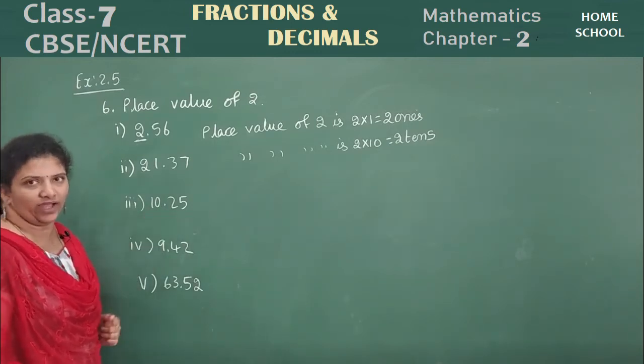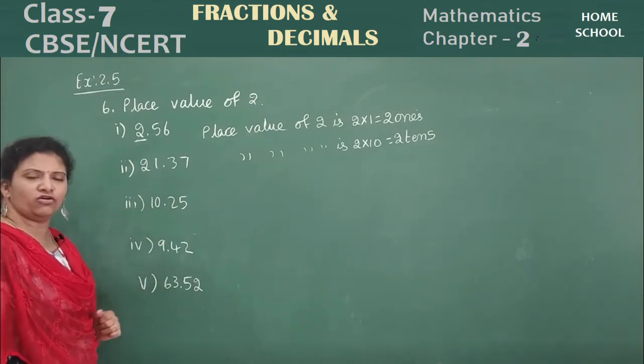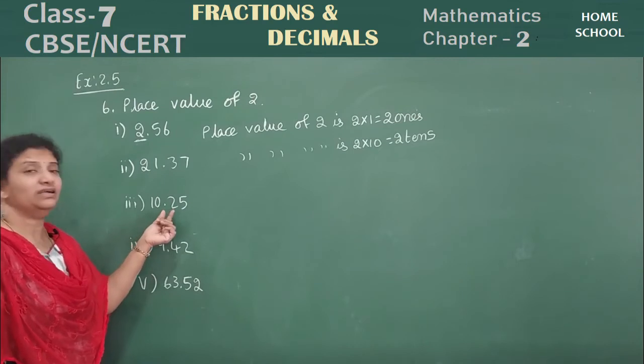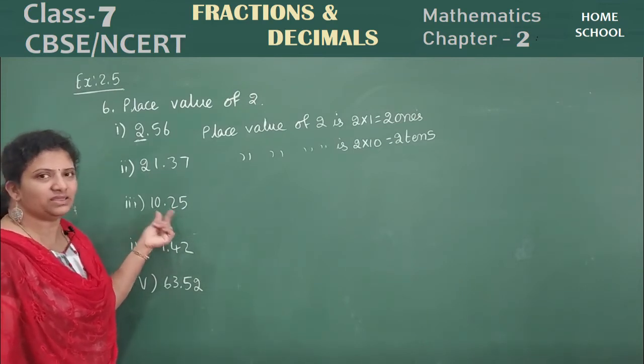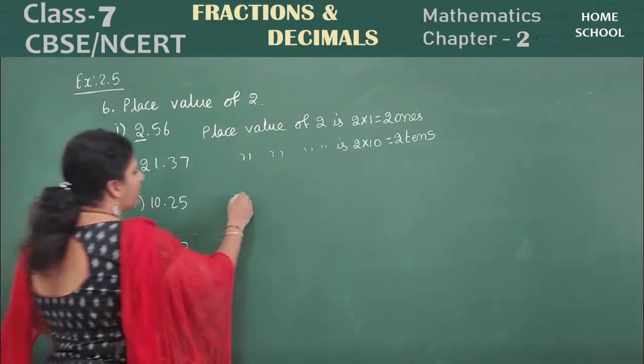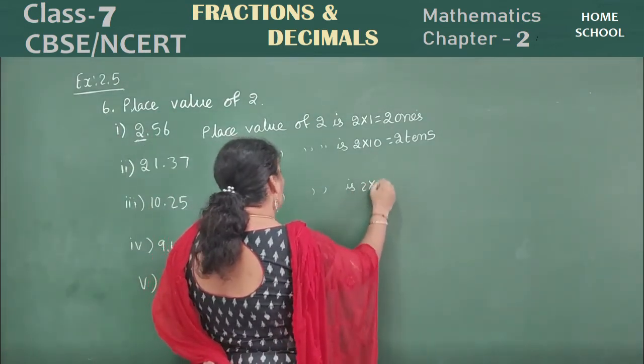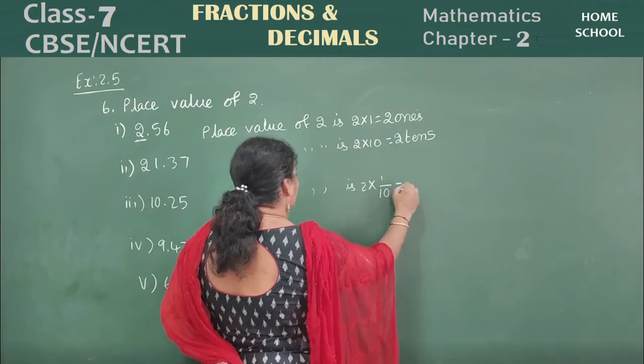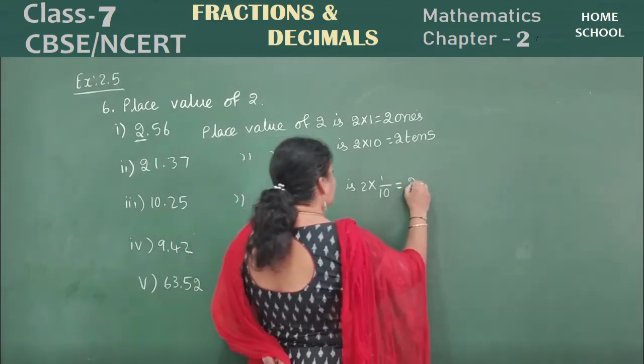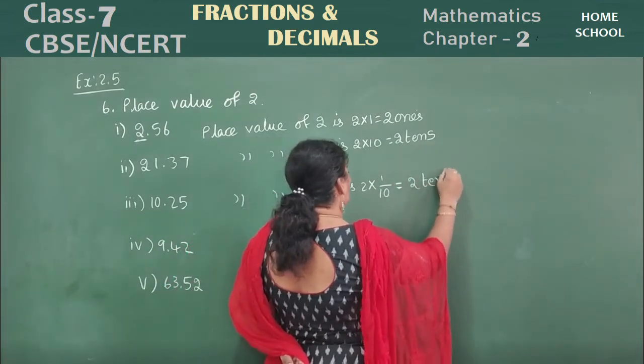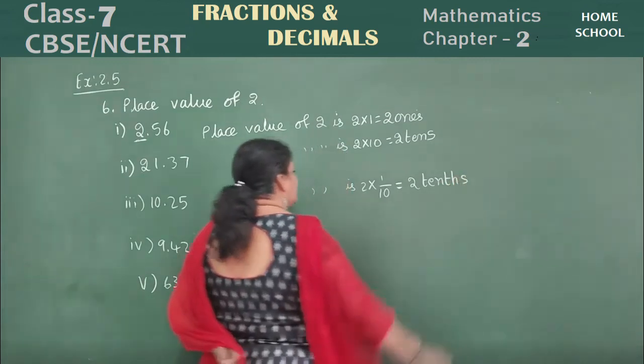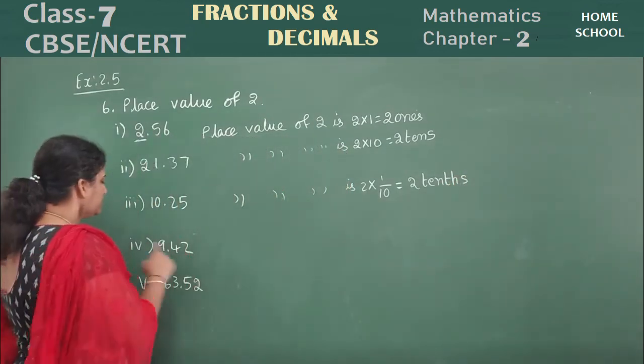In your third problem, 10.25. What is the place value of 2? 2 is in tenth. Tenth place means place value of 2 is 2 into 1 by 10. Tenth place, that is 2 tenths place it is. Okay? See this one, 9.42.